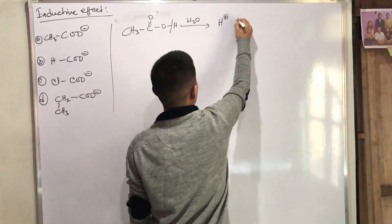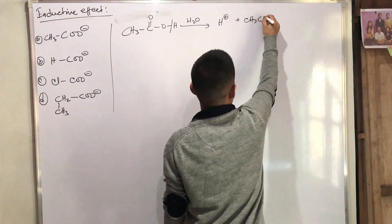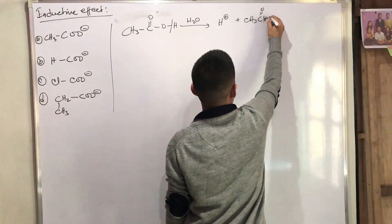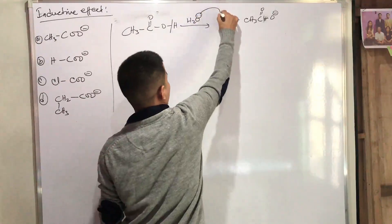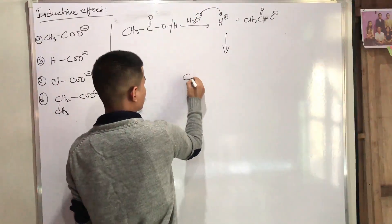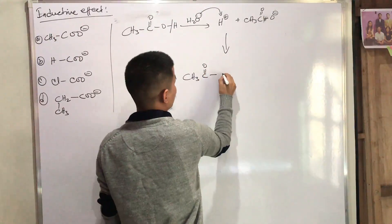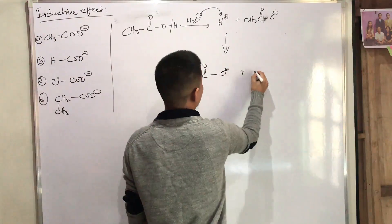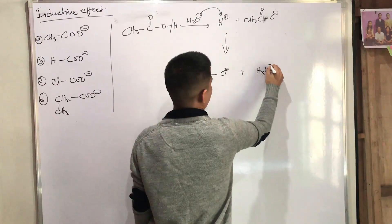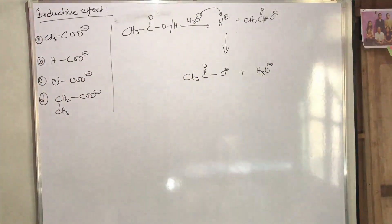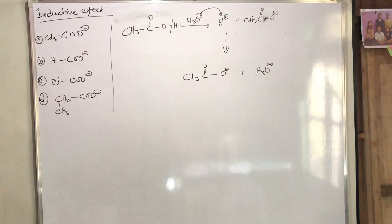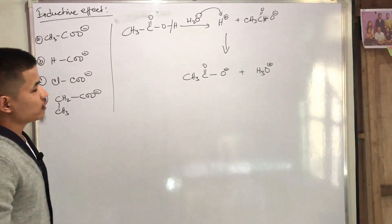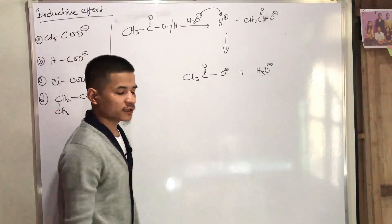It produces H+ plus CH3C double bond O, O minus — and also H3O+ plus CH3COO minus. So now the lime hill — the available ions are formed.